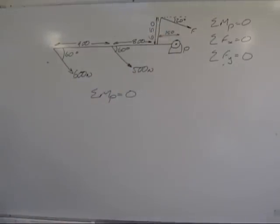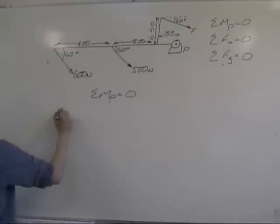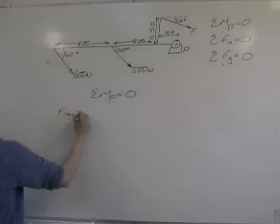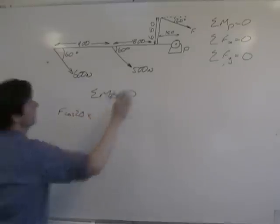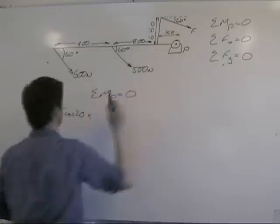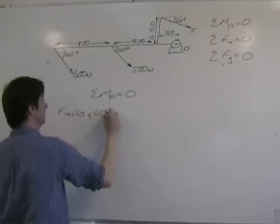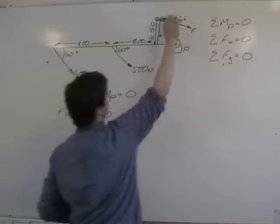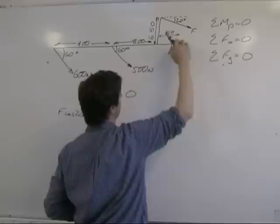So we start with F cos 20 times its distance - the perpendicular distance to the pivot point is 650. Now that's pulling that way, that's clockwise about that point.